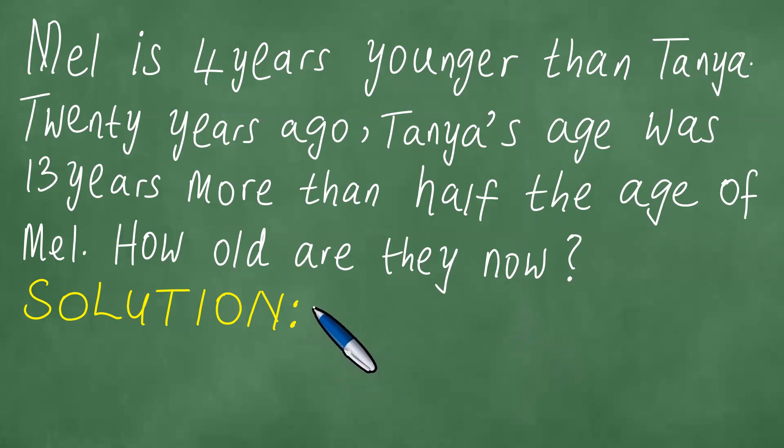To solve this problem, we let X be Mel's age. Simultaneously, we note that Y is Tanya's age.